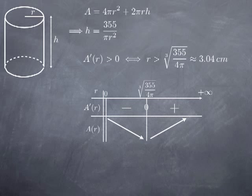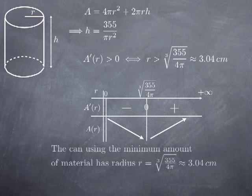The derivative A'(r) is negative for r less than the critical value and positive for r greater than it. This means A is decreasing from 0 up to the critical value and then increasing, so the function A has an absolute minimum at r = ∛(355/(4π)) centimeters. The can using the minimum amount of material has a radius of approximately 3 centimeters.